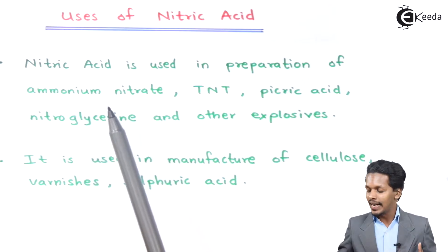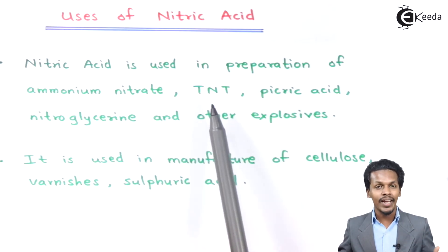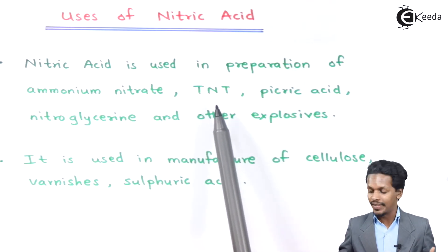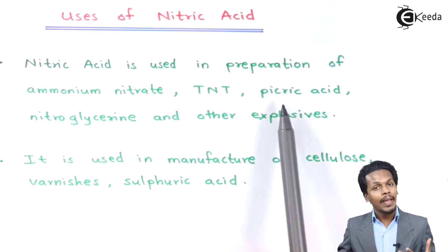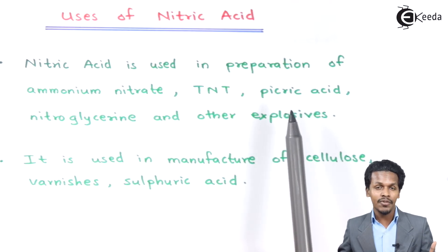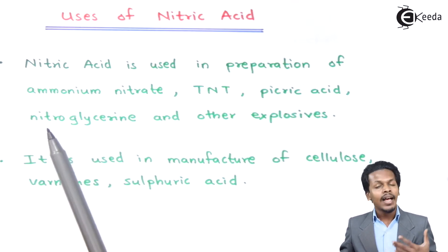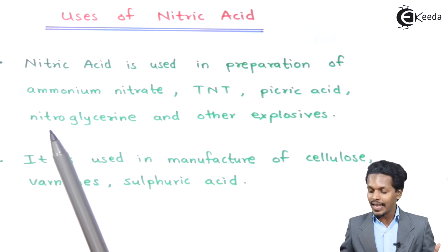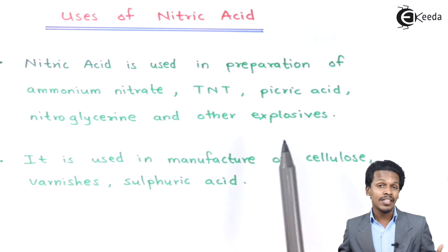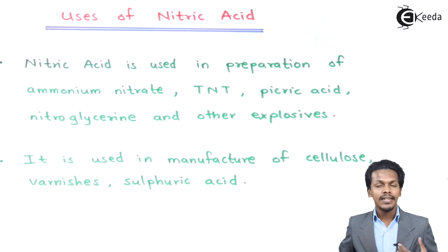Nitric acid is also used in the preparation of TNT, that is trinitrotoluene, which is an explosive. Along with that, picric acid — whose preparation from the reaction of phenol and nitric acid we have understood earlier — as well as nitroglycerin and other explosives can also be prepared using nitric acid.